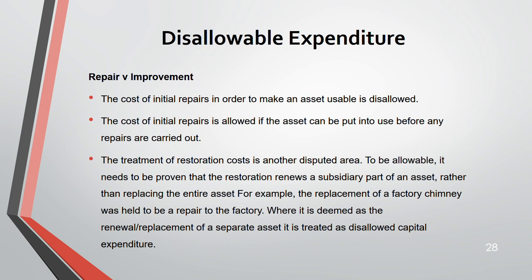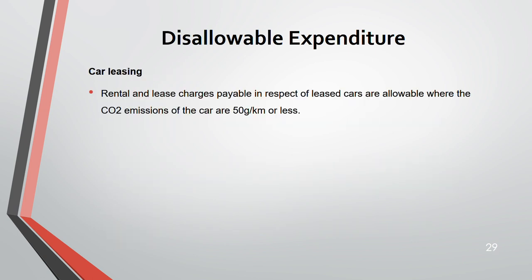Restoration costs: replacing a subsidiary part of an asset is allowable as a repair. But replacing the entire asset is an improvement — not allowable. For example, replacing a factory chimney is a repair to the factory. However, if it is deemed replacement of a separate asset, it is disallowed capital expenditure. Replacing just a rooftop or one machine within the factory is allowable as a repair.